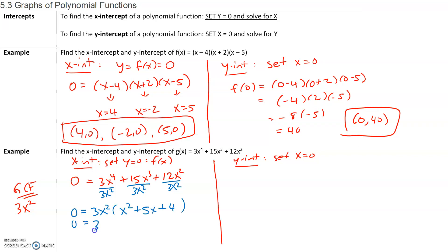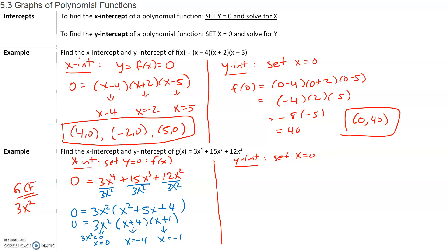Now we keep factoring. We have 0 equals 3x squared times the trinomial. The two numbers that multiply to 4 and add up to 5 are 4 and 1. By the zero product property, we set each factor equal to 0. Setting x plus 1 equal to 0 gives x equals negative 1. Setting x plus 4 equal to 0 gives x equals negative 4. Setting 3x squared equal to 0, we divide by 3 and take the square root to get x equals 0. So our x-intercepts are (0, 0), (−4, 0), and (−1, 0).